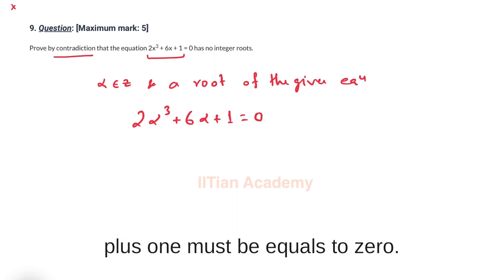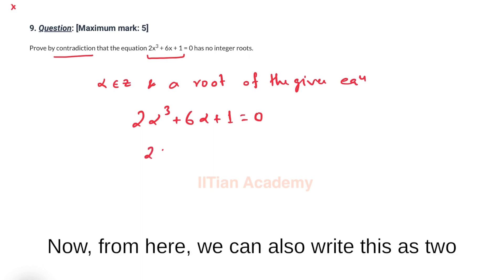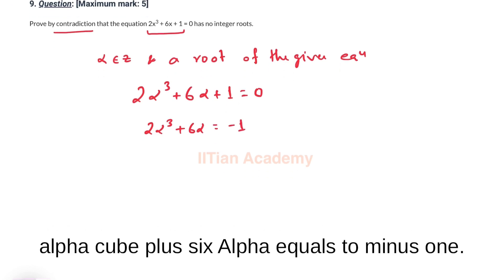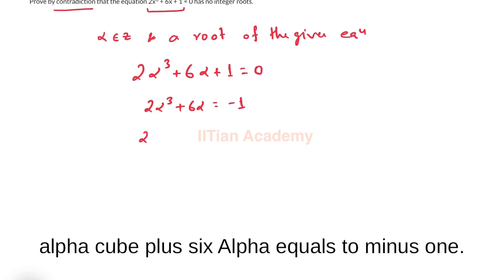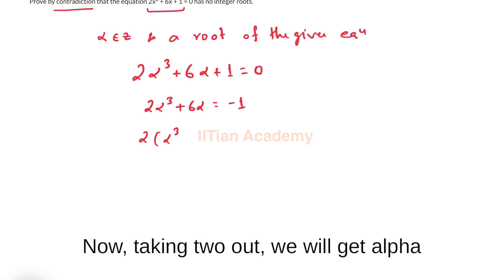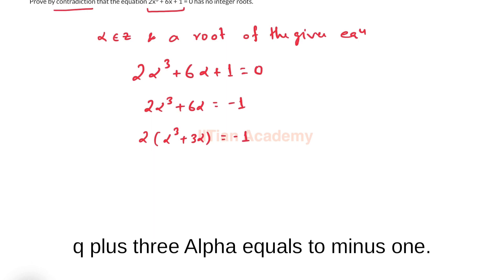Now from here we can also write this as 2 alpha cube plus 6 alpha equals to minus 1. Now taking 2 out, we will get alpha cube plus 3 alpha equals to minus 1.